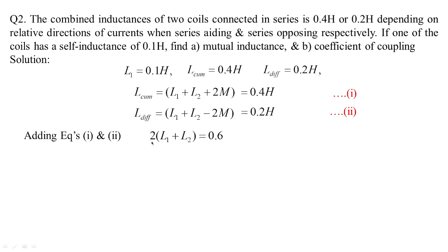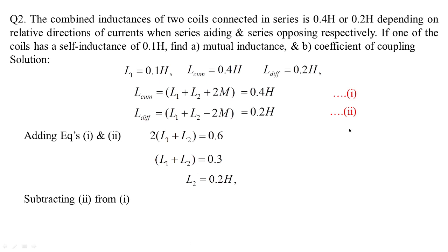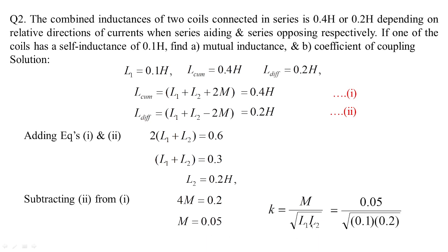Adding equations 1 and 2, we get 2(L1 + L2) = 0.6, so L1 + L2 = 0.3. Since L1 = 0.1 H, L2 = 0.2 H. Subtracting equation 2 from equation 1 gives 4M = 0.2, so M = 0.05 H. The coefficient of coupling is K = M / √(L1·L2) = 0.05 / √(0.1 × 0.2) = 0.35.